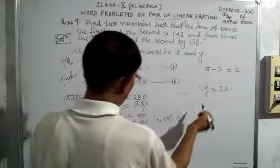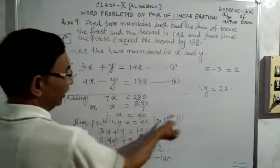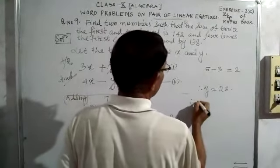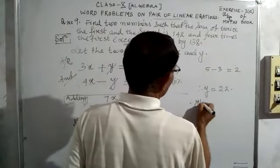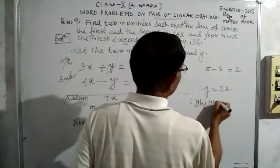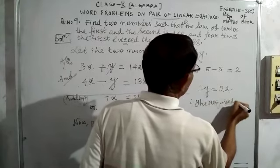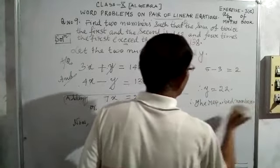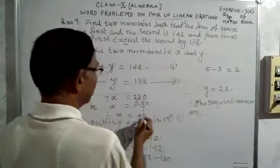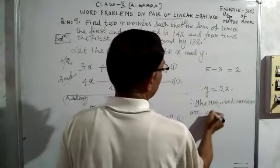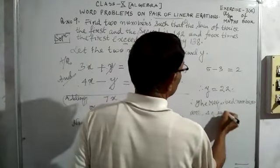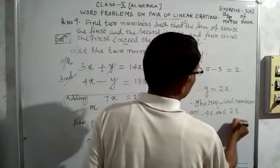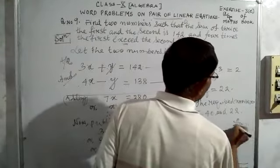So we have the value of x = 40 and the value of y = 22. Therefore, the required two numbers are 40 and 22. If we verify, it will check out. So that is our answer.